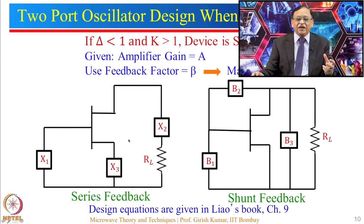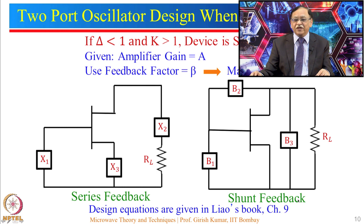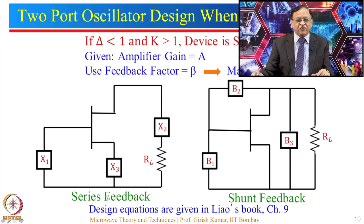In your analog circuits course, you might have designed a common emitter or common source amplifier where a resistance is used to stabilize the amplifier. Here, however, X3 is not a resistance — it can be an inductance or capacitance. This is series feedback. An alternate configuration uses shunt feedback, where the feedback is from the output to the input side. The next step is to determine the values of X1, X2, X3 for series feedback, or B1, B2, B3 for shunt feedback.